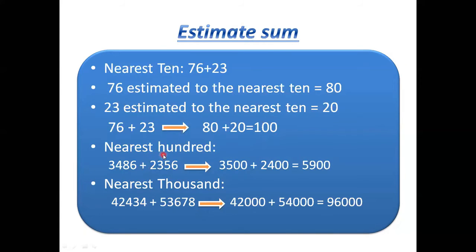To estimate a sum to the nearest 100, check the tens digit. 3,486 rounds to 3,500. 2,356 — tens digit is 5, so increase hundreds by 1 and replace the right digits with zero, giving 2,400. Then add the rounded numbers together. An example for nearest 1000 is also provided.